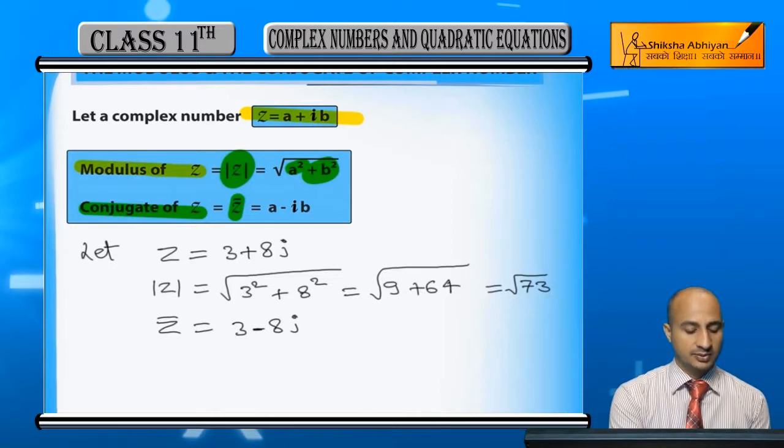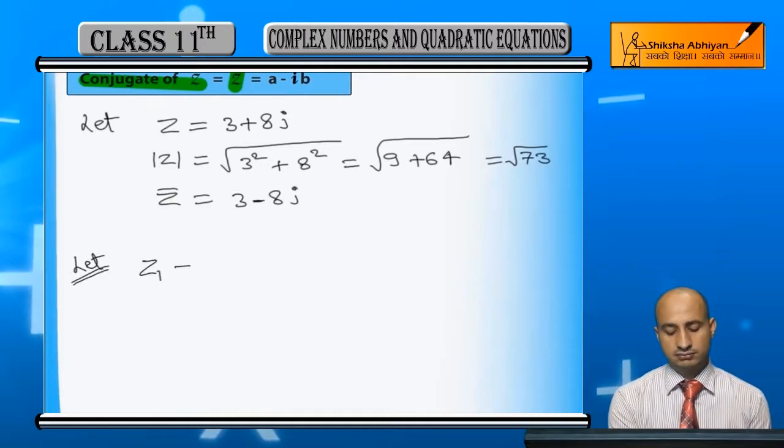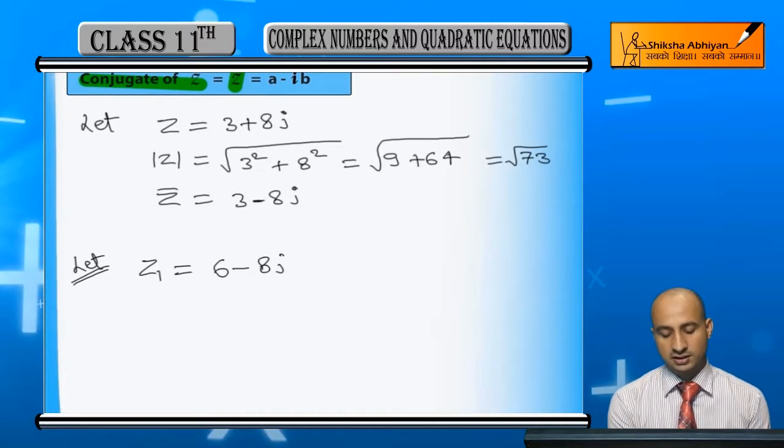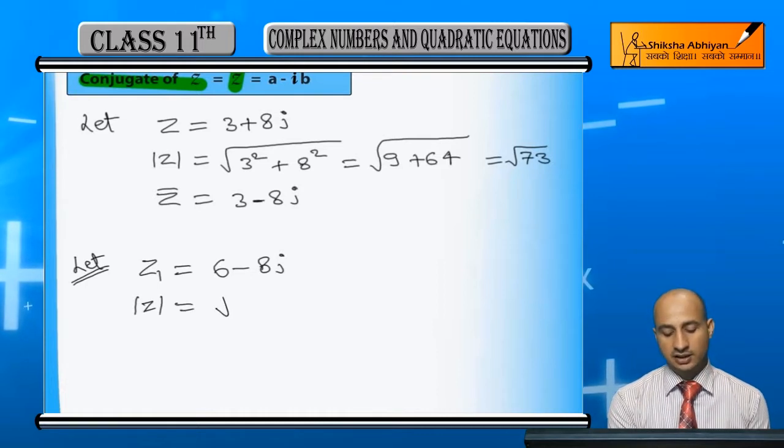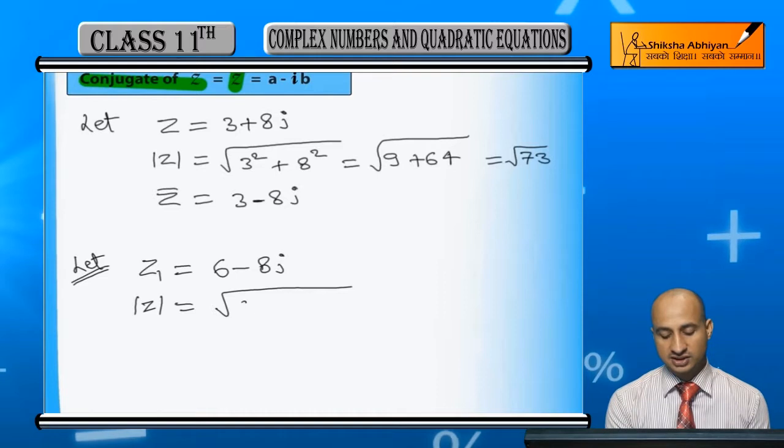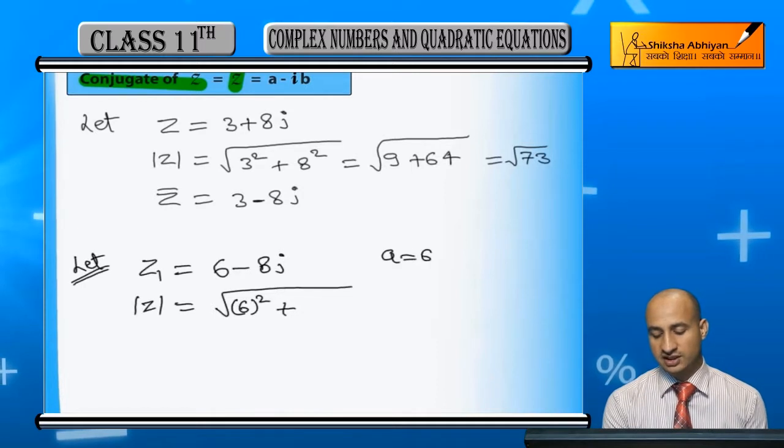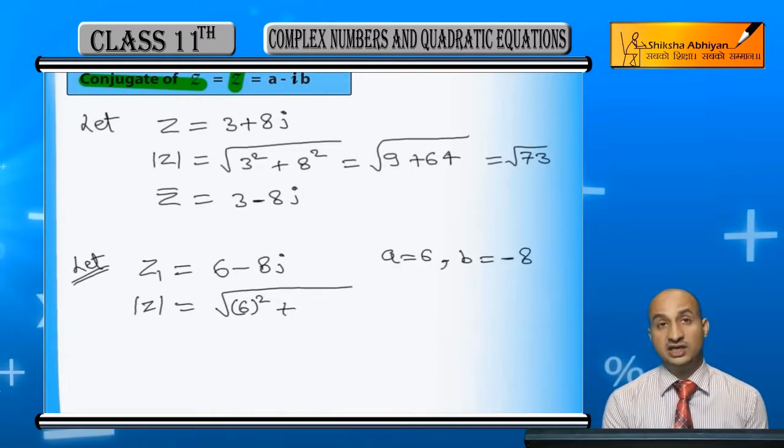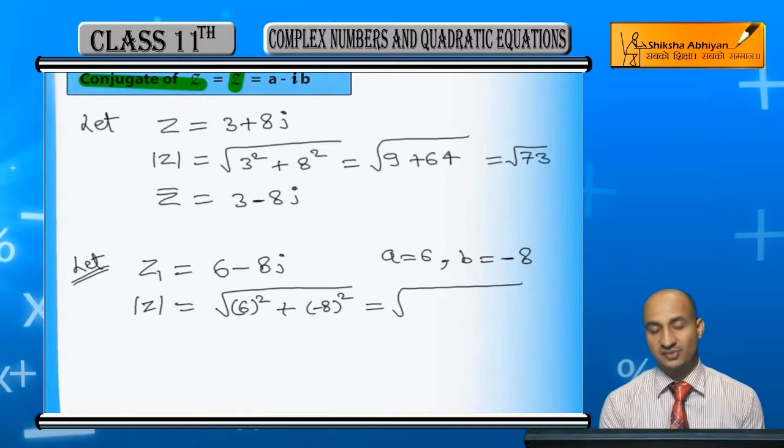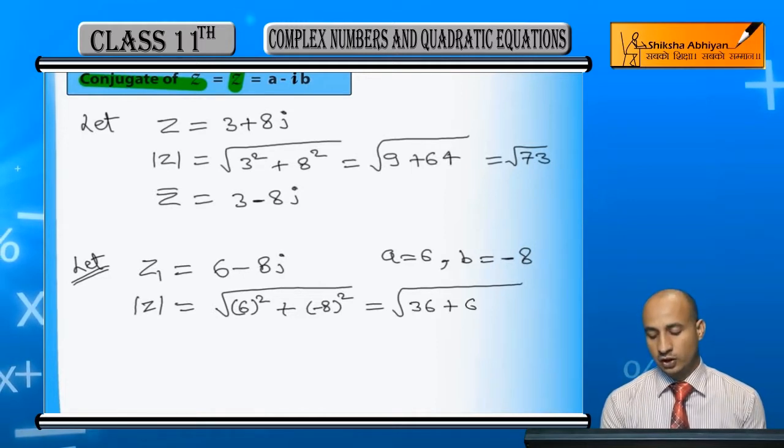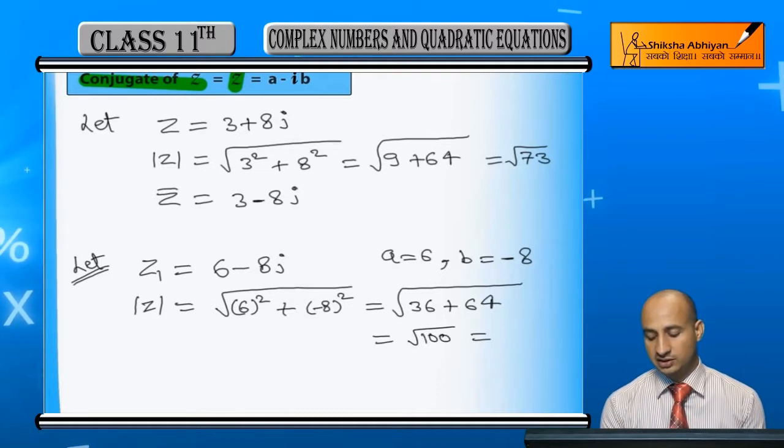Let's take another example. Let Z1 = 6 - 8i. The modulus of Z1 will be square root of 6 squared plus (-8) squared. Here a = 6 and b = -8, the imaginary part. So 6 squared is 36, 8 squared is 64, and 36 plus 64 equals 100. The square root of 100 is 10.